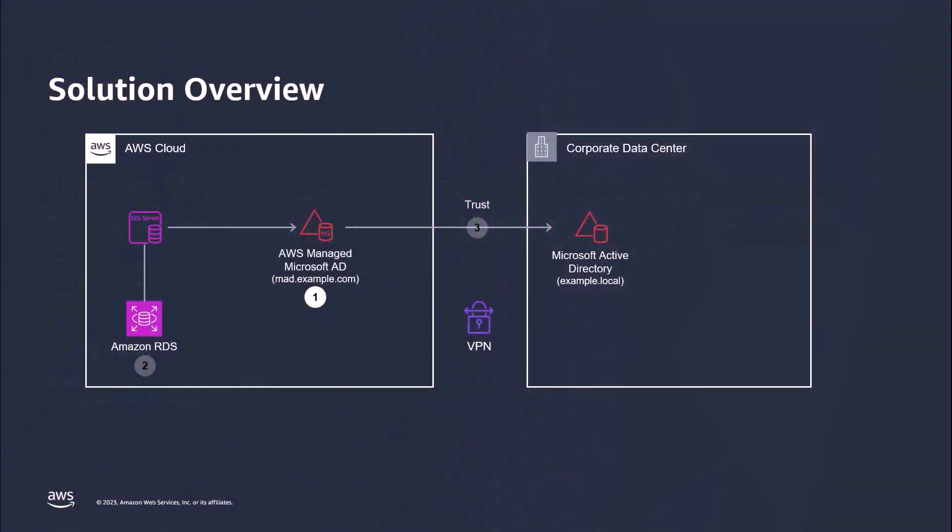Here's a high-level overview of the environment we'll be setting up today. The first step is to set up an AWS Managed Microsoft Active Directory within our Amazon VPC. A Managed Microsoft Active Directory is required in order to allow users to authenticate using Windows authentication on an RDS for SQL Server database instance. For this presentation, we'll already have a Managed Microsoft Active Directory environment set up: mad.example.com. We'll then utilize the AWS console to create an Amazon RDS SQL Server database instance and connect it to our Managed Microsoft Active Directory environment.